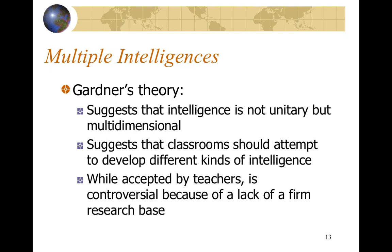Gardner's theory of multiple intelligences states that intelligence is not unitary but multi-dimensional. He suggests classrooms should attempt to develop different kinds of intelligence — social, emotional, academic, artistic, and more. We all may fall in different spaces on that spectrum. For instance, I'm good at public speaking and am creative, so I have more of an artistic intelligence than a purely academic one. If you wanted to cater an assignment to me, you'd want to allow some creativity rather than strict rigid norms. There isn't a strong research base for adjusting curriculum to multiple intelligences, but it's important to think about what types of intelligence your students have.